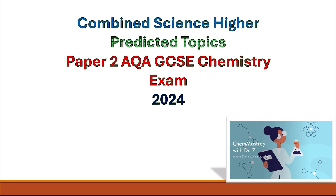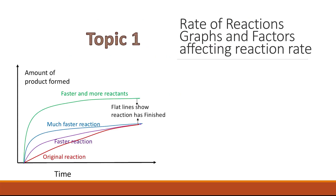Chemistry Paper 2, AQA GCSE Chemistry Exam 2024, Complete Science Higher — Predicted Topics. The first topic is the rate of reaction graphs and factors affecting reaction rate.